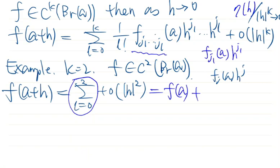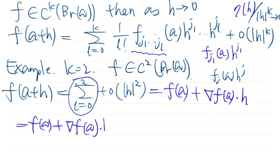This is exactly the inner product of the gradient of F at A and the vector H. So this is the term corresponding to L equal to one. And for the term K equal to two, I need to make space. I enlarge this and move this to the next line.